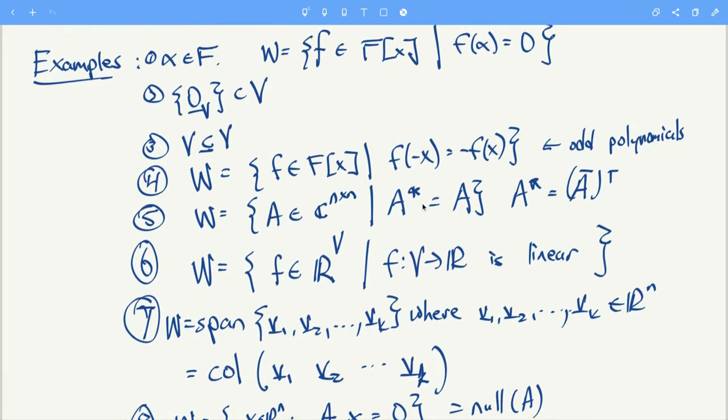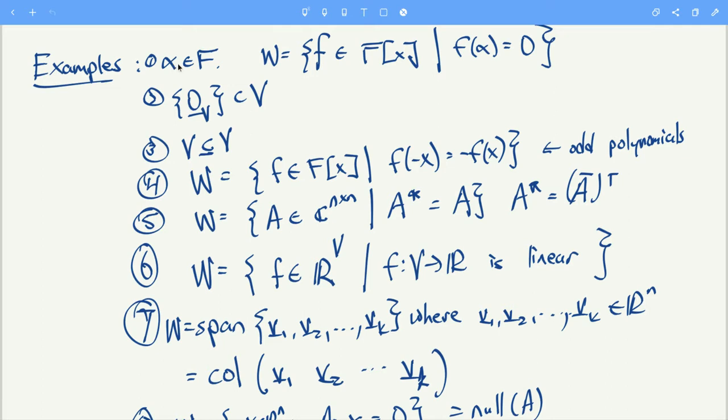Some examples of subspaces: if alpha is a scalar then we can look at the subspace of polynomials satisfying f of alpha equals zero, the set of polynomials having a root at alpha. You can also look at the trivial vector space. That's a subspace of whatever, so like take a vector space V, put a zero vector in a bag and call that the trivial subspace. That's a subspace. Of course a vector space is a subspace of itself always, so that's another kind of non-interesting example.